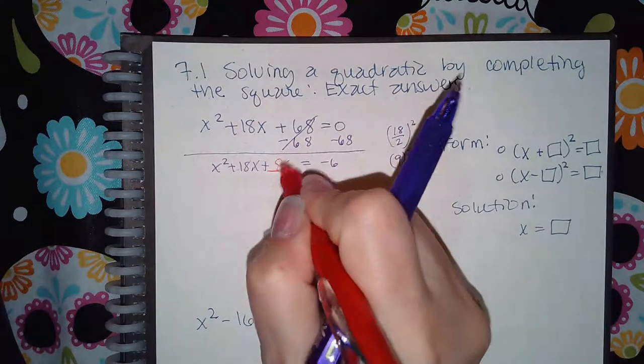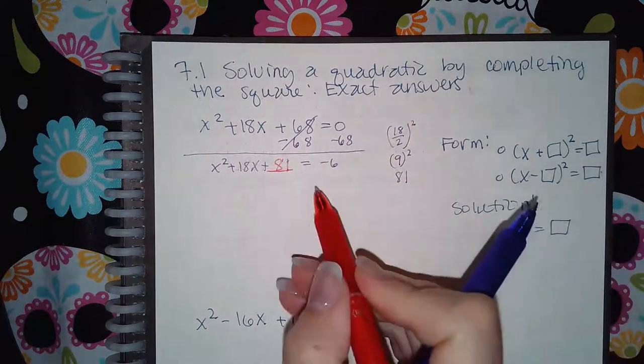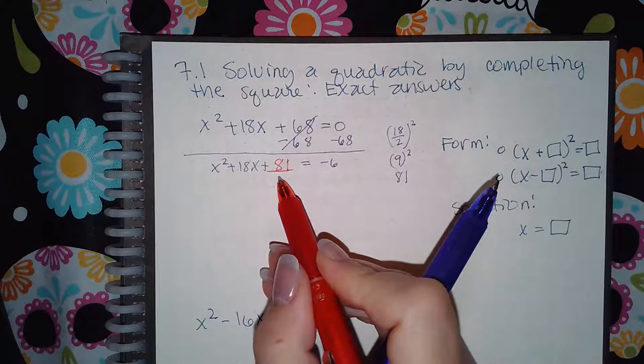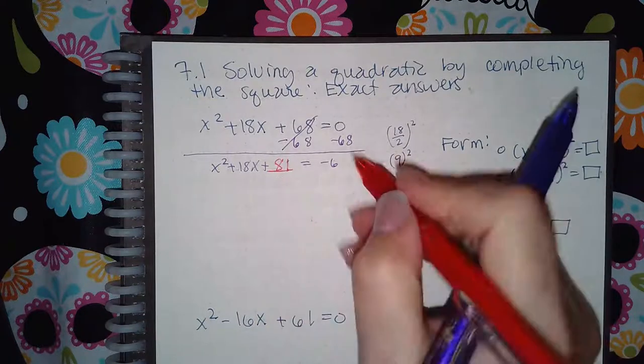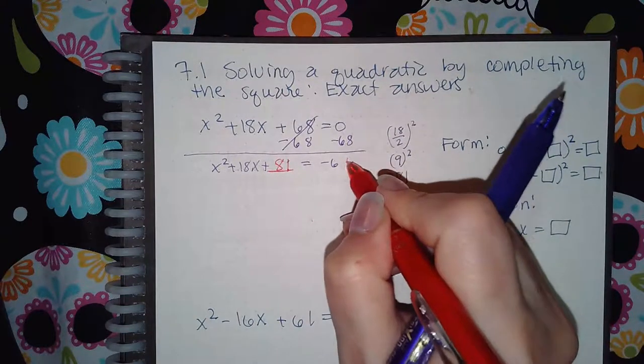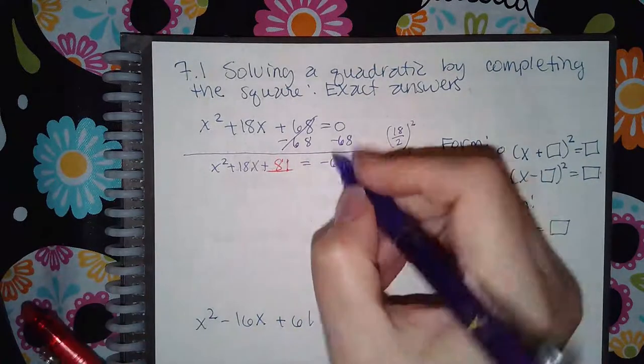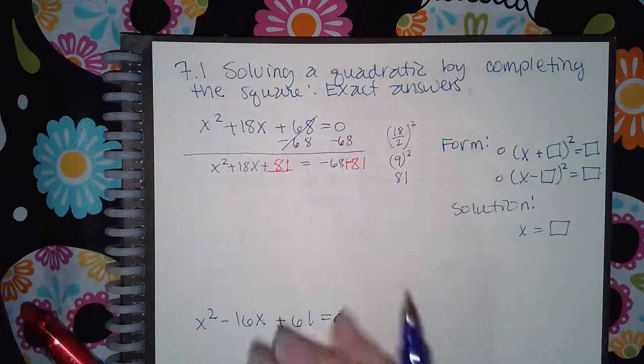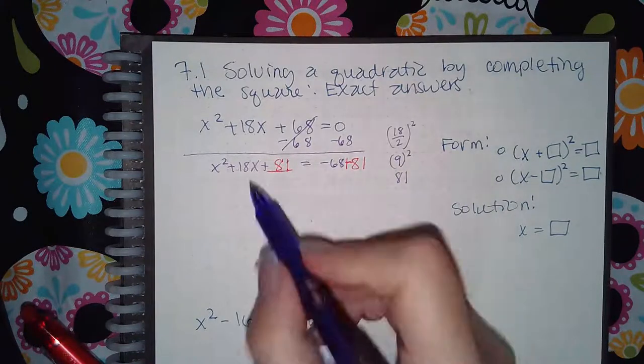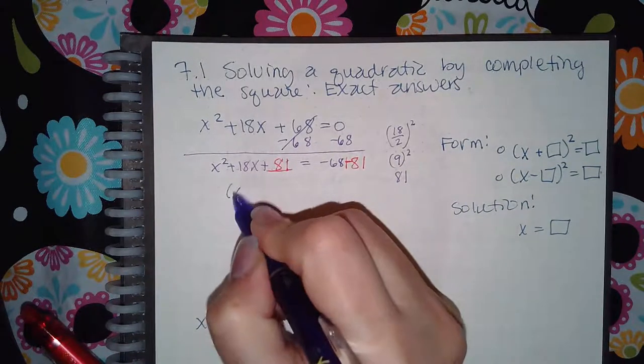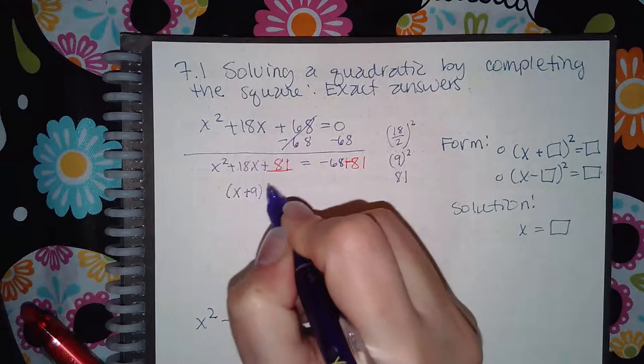So the number that I need to add here is an 81 to complete the square. But this is an equation, and if you're going to add 81 to one side, you have to add 81 to the other side as well to keep the equation equivalent.